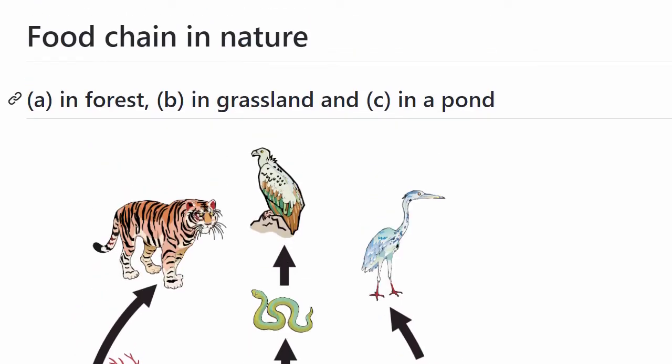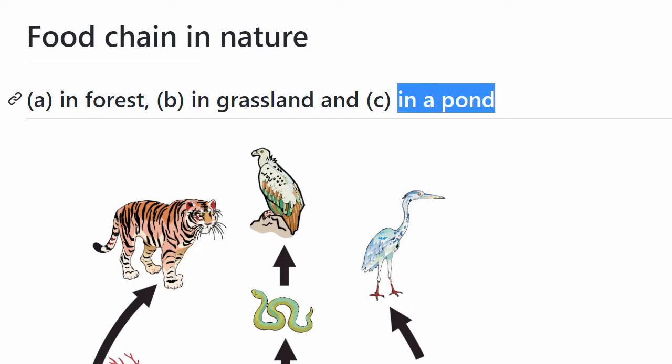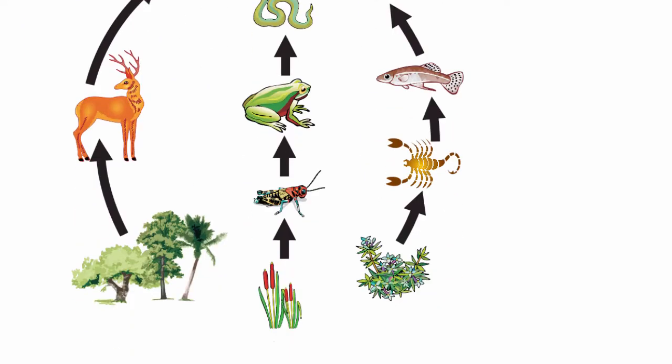This is a food chain in grassland. The first level has producers, the second level has primary consumers, and the third level involves pond organisms. So this is a food chain.